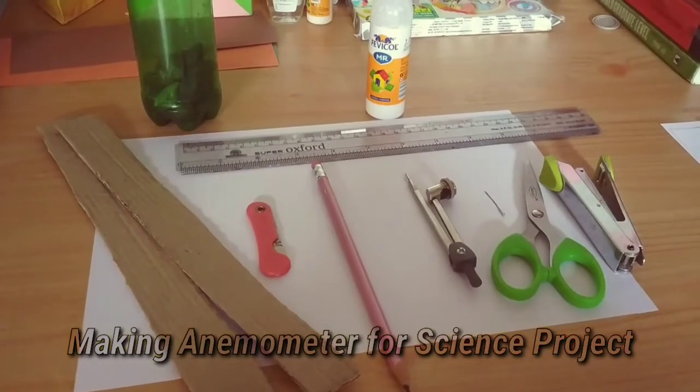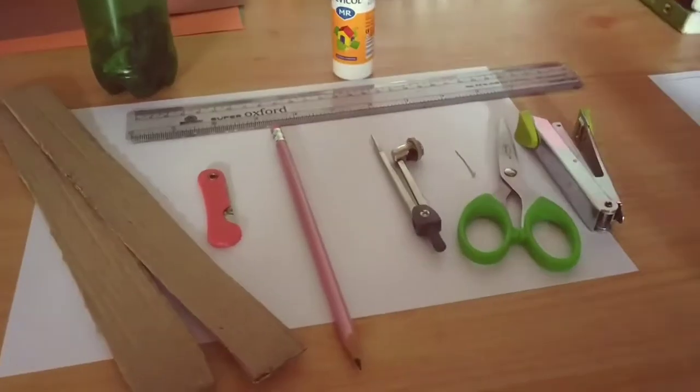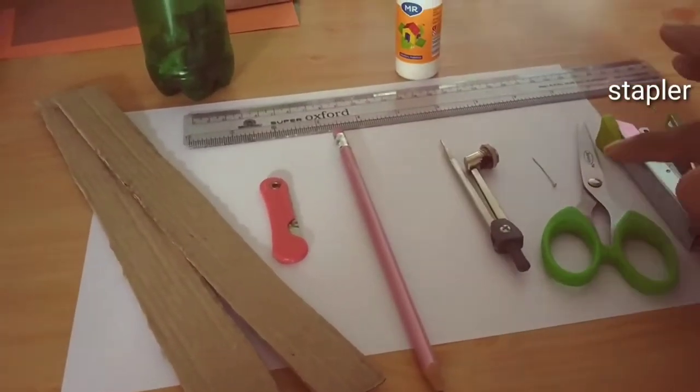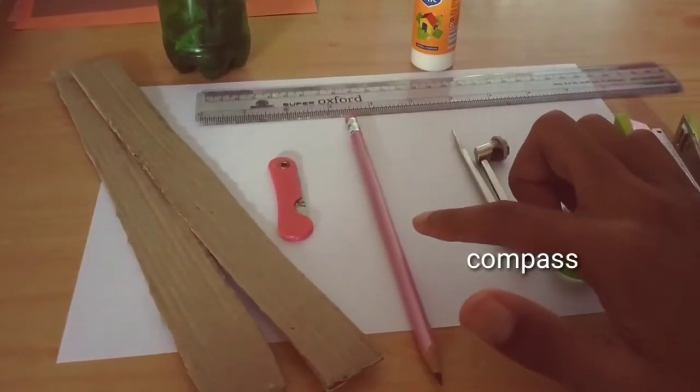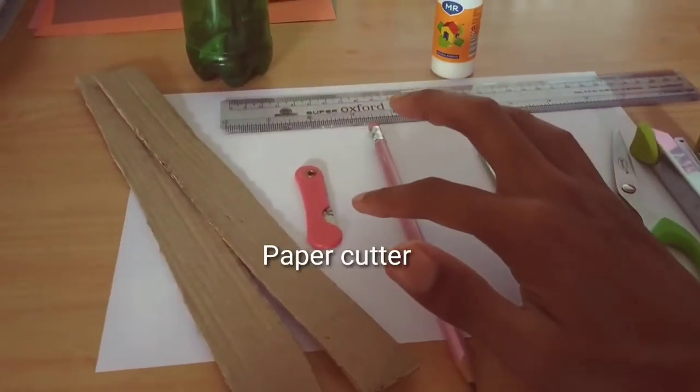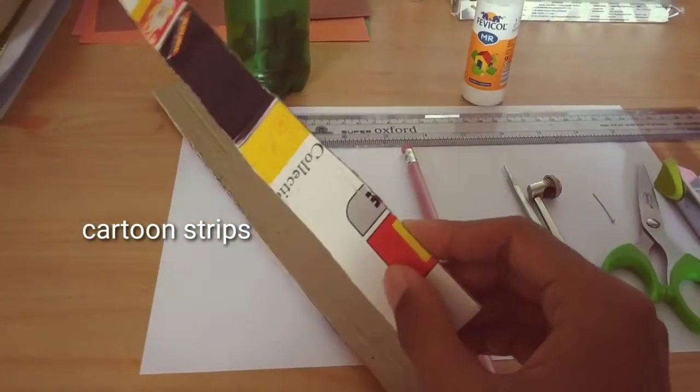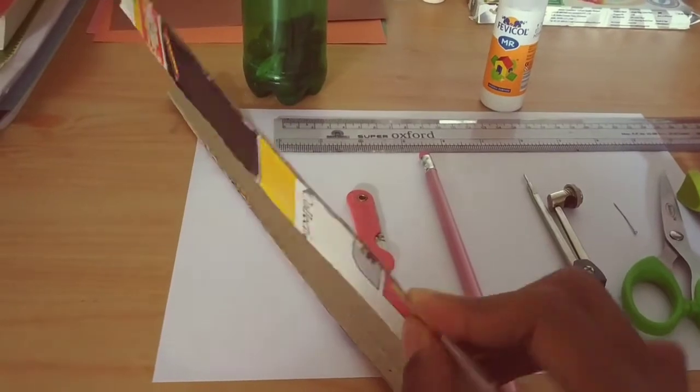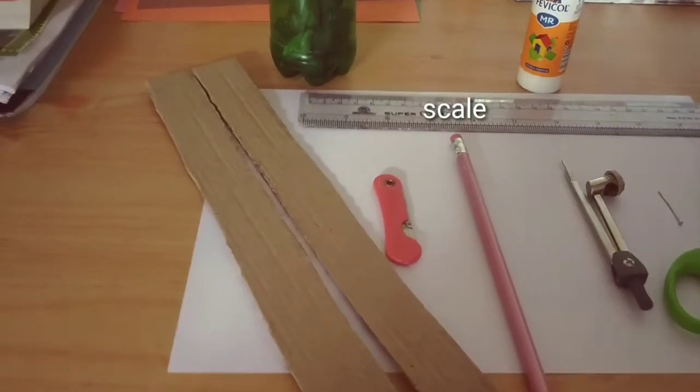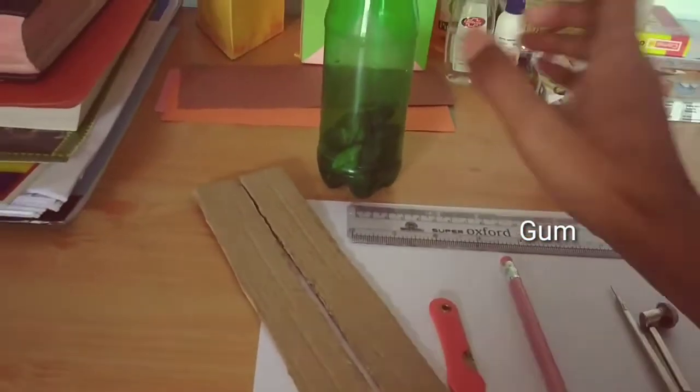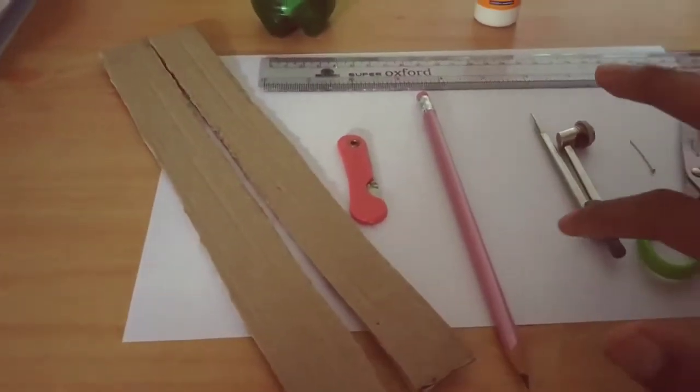Today we will make an anemometer. For this project, all the requirements are a stapler, scissors, pushpin, compass, pencil, paper cutter, two strips of cardboard box cut into long shapes the size of a scale, a scale, glue, an empty bottle with some stones inside, and four pieces of A4 paper for making the cups.